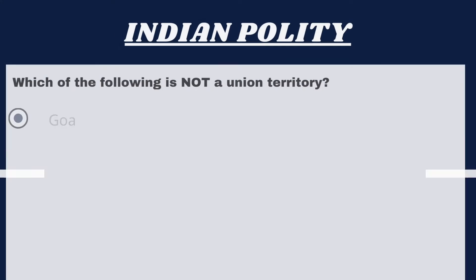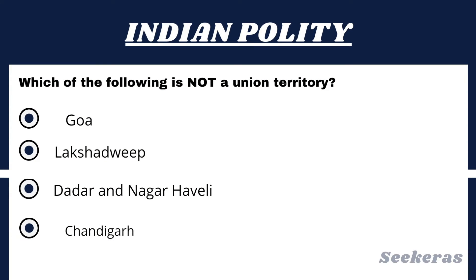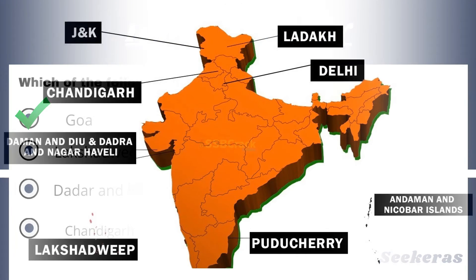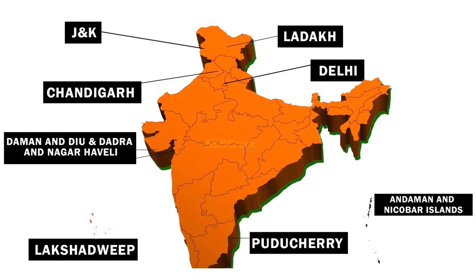Question number 2. Which of the following is not a union territory? Option 1, Goa; Option 2, Lakshadweep; Option 3, Dadra and Nagar Haveli; or Option 4, Chandigarh. The answer is Option 1, Goa. The 9 union territories are Andaman and Nicobar Islands, Chandigarh, Dadra and Nagar Haveli, Daman and Diu, Lakshadweep, National Capital Territory of Delhi, Puducherry, Ladakh, and Jammu and Kashmir.